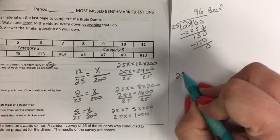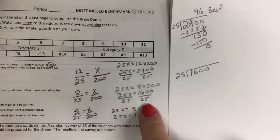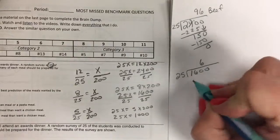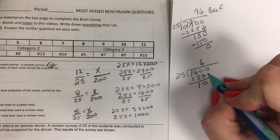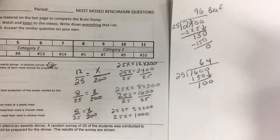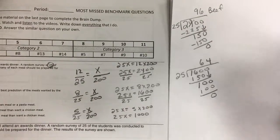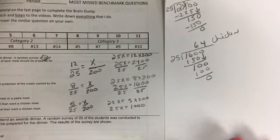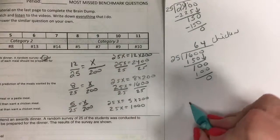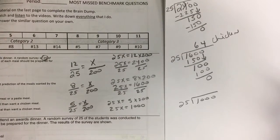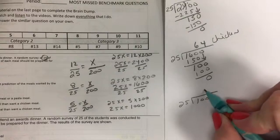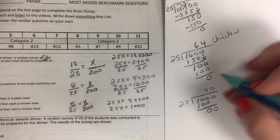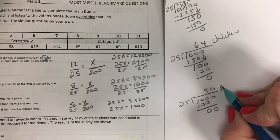And then I want to know how many times 25 goes into 1600, so I can finish this problem out. So 6 quarters is $1.50. So 64 students want the chicken meal. And then to finish up this one, how many times does 25 go into 1000? Well, four quarters makes $1.00, and then just got to put our placeholder in our zero. So 40 people want the pasta.